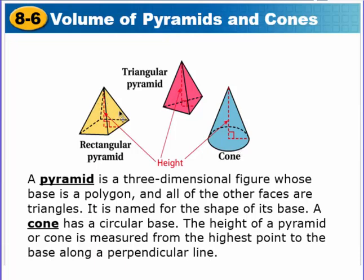That will become very important whenever we deal with surface area. A pyramid is named for the shape of its base. The cone has a circular base. The height of a pyramid or a cone is measured from the highest point to the base along a perpendicular line. This height is always going to be drawn from the base to the farthest point away, and it will drop right down to the center of that particular base.